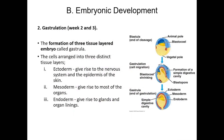The next stage is gastrulation, which occurs in weeks 2 and 3. During this stage, the embryo cells differentiate into three tissue layers, forming the gastrula. The outer layer is the ectoderm, which gives rise to the nervous system and the epidermis of the skin. The middle layer is the mesoderm, which gives rise to most of the organs. The inner layer is the endoderm, which gives rise to glands and organ linings.